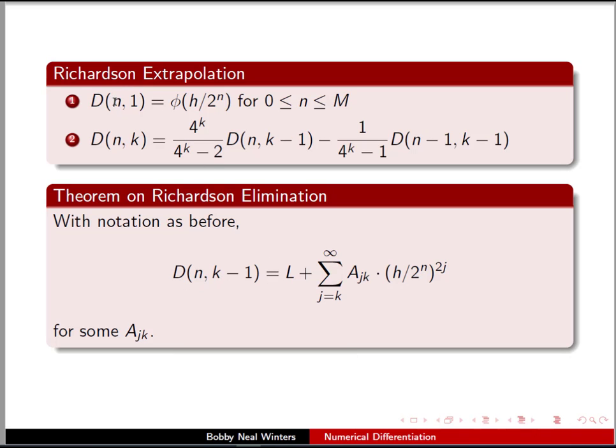We have D_n(1) to be equal to φ(h/2^n) for 0 less than or equal to n less than or equal to m, and we define D_n(k) recursively in this way. And then we define Richardson elimination, that we can get our derivative approximation for our derivative in this way, where these a_k are our numbers that we get in our approximation.